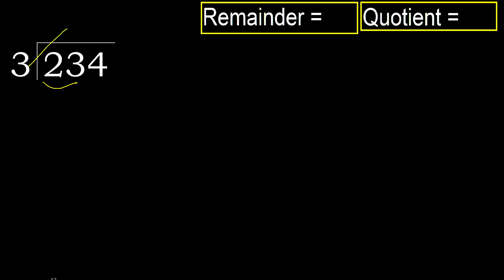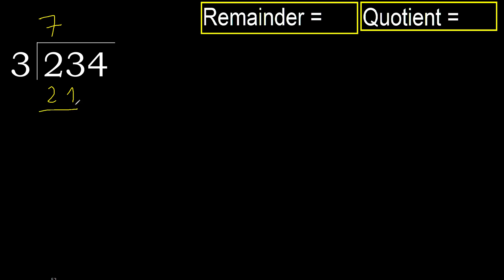3 multiplied by which number is nearest to 23 but not greater? 3 multiplied by 8 is 24 — 24 is greater. 3 multiplied by 7 is 21 — 21 is not greater.